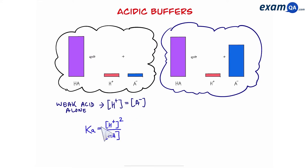That means we can use the formula Ka equals H+ squared over HA. Rearranging to give us H+ gives us this expression. And of course once you have H+ then you can work out the concentration.